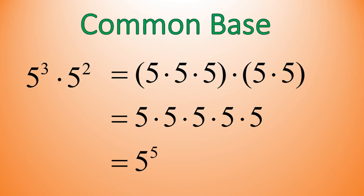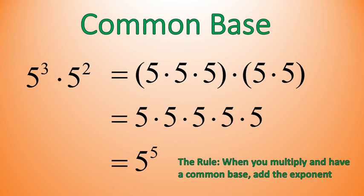You might notice something about this number 5, and that gives us our rule. The rule for multiplying when you have the same base is this: when you multiply and you have a common base, you just add the exponents. So we don't have to expand it all out every time. We can just add 3 plus 2 to get 5, leave the base the same, and change the exponent only.